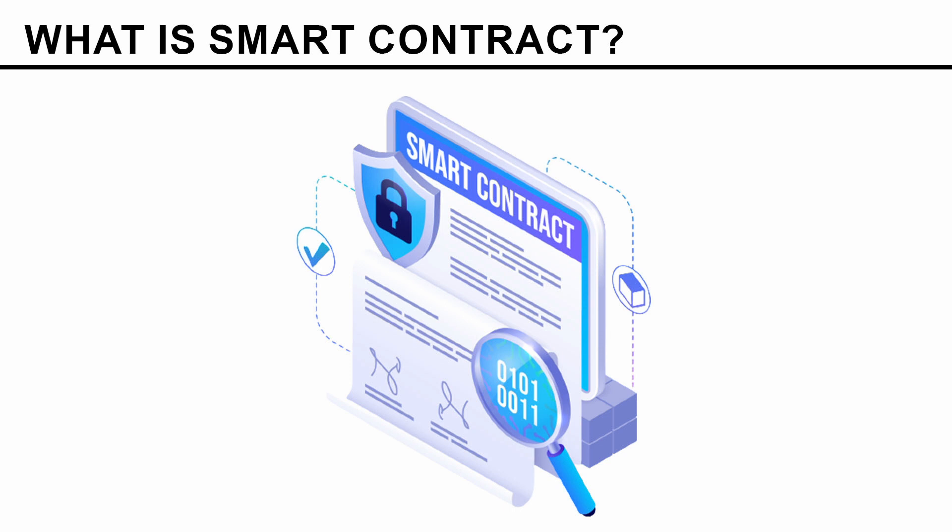Despite the name, smart contracts are actually programs that run on the blockchain. What comes to your mind when you hear the word contract? A contract is a set of rules or clauses that parties agree on, and it governs the relations between them. It basically says: if this happened, then this should happen, then this should happen.